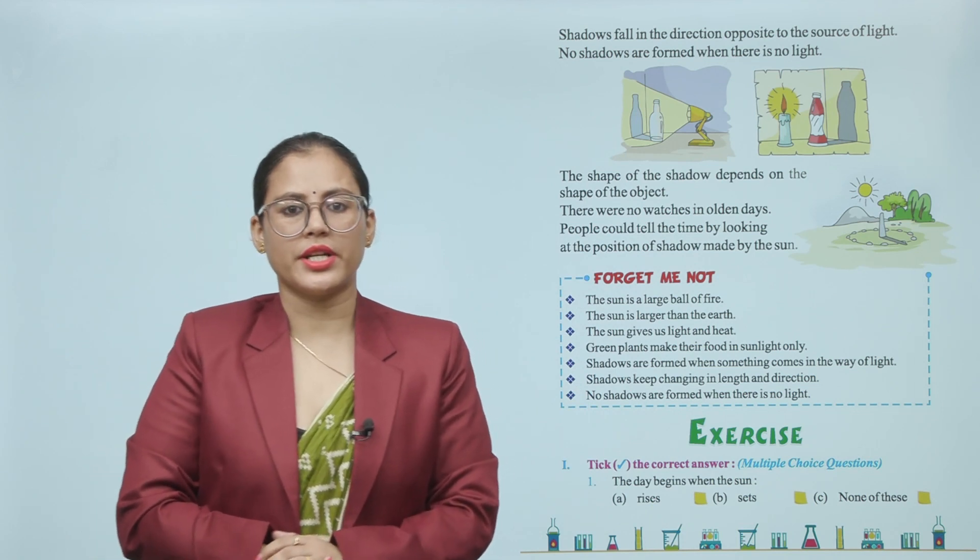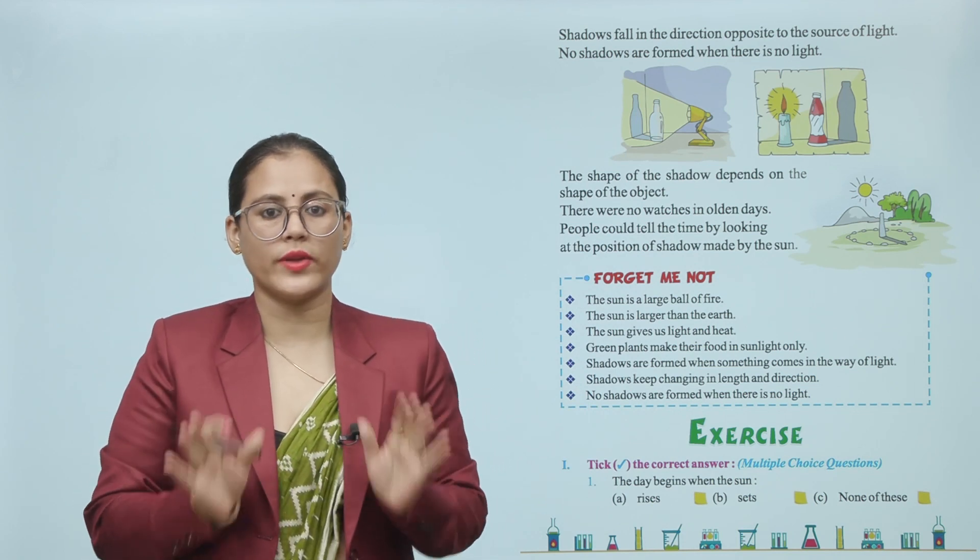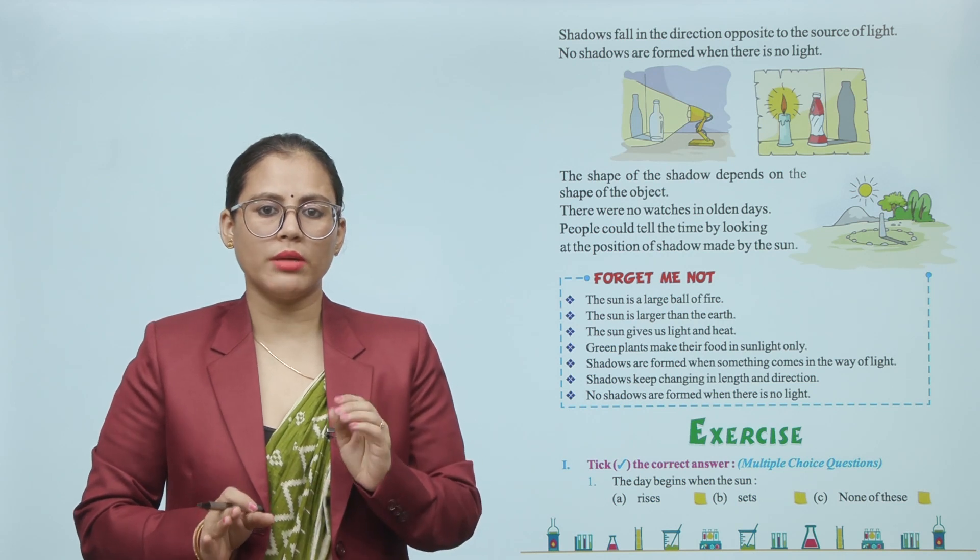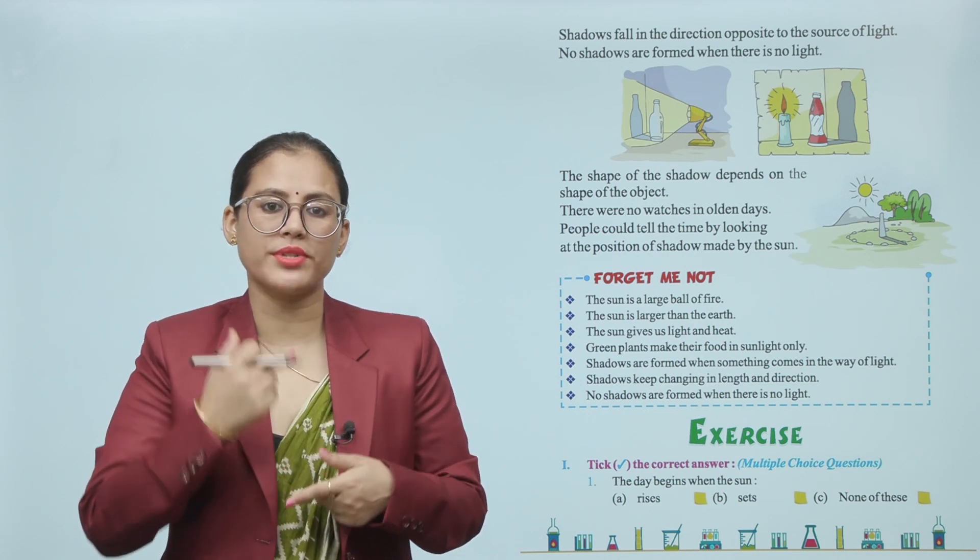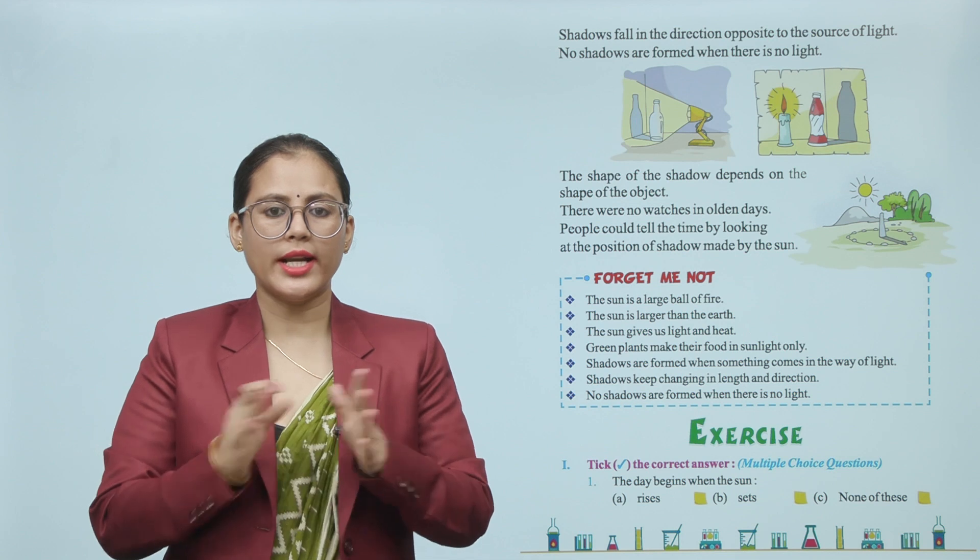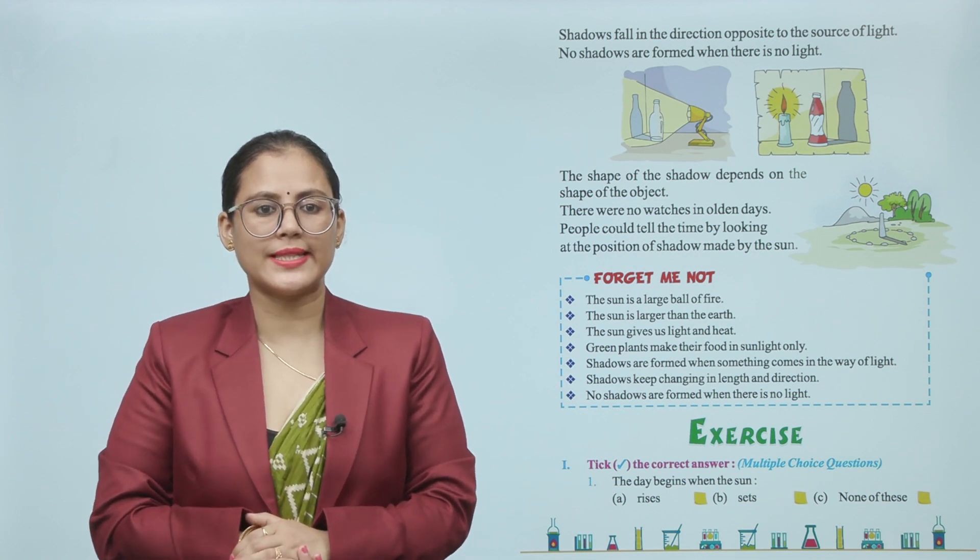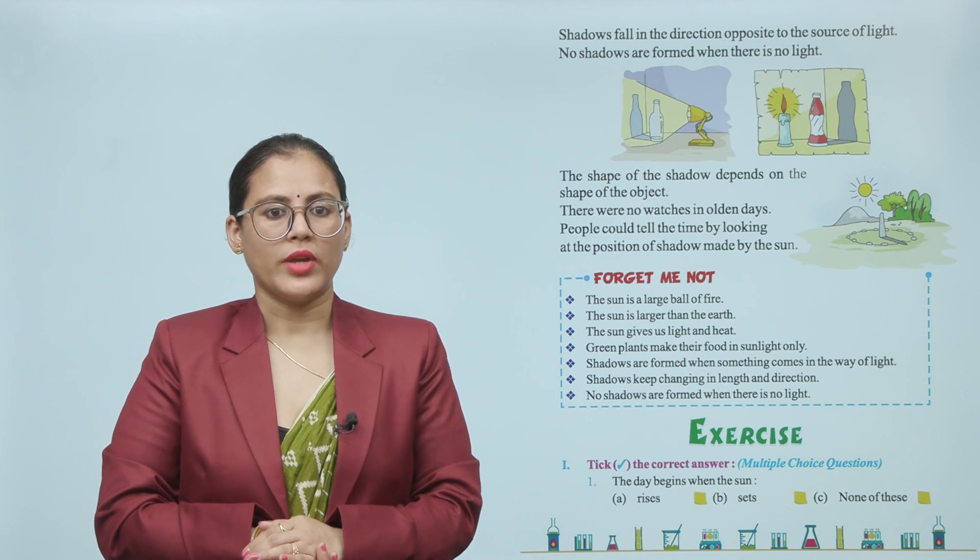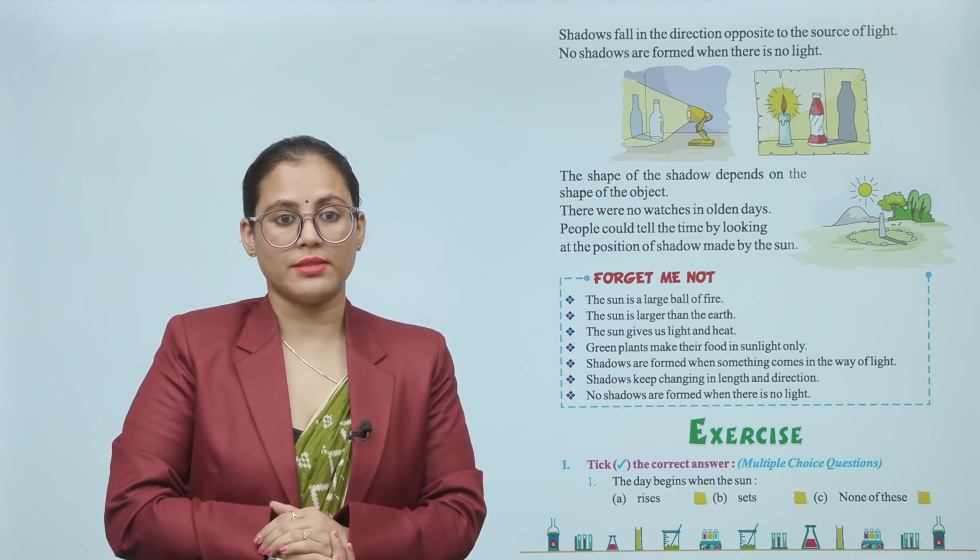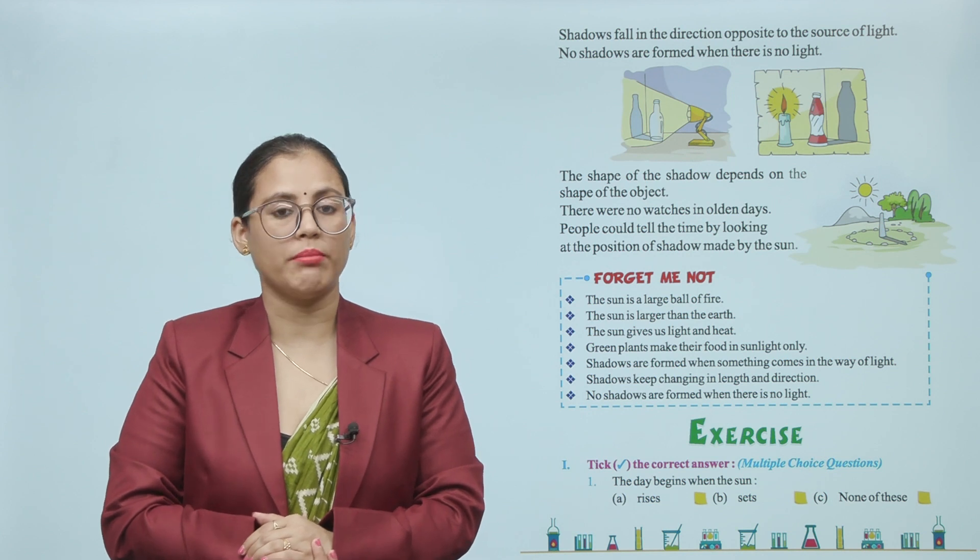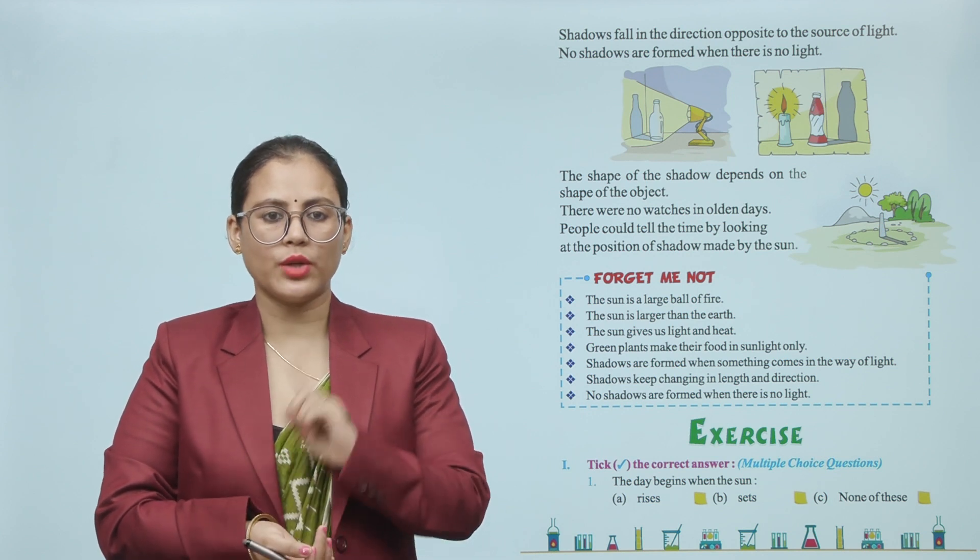Shadows fall in the direction opposite to the source of light. No shadows are formed when there is no light. The shape of the shadow depends on the shape of the object. There were no watches in olden days.